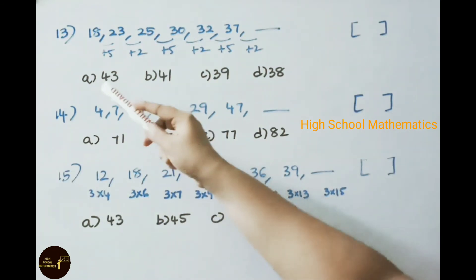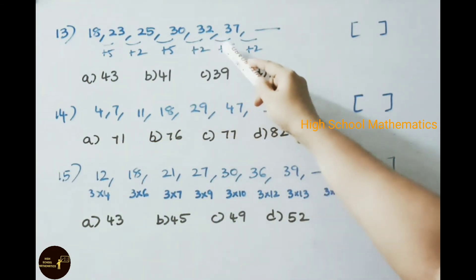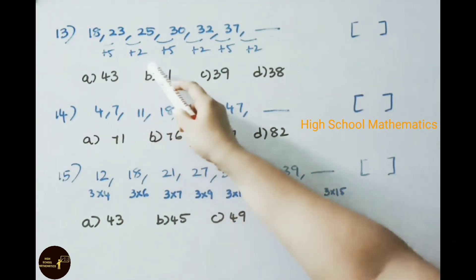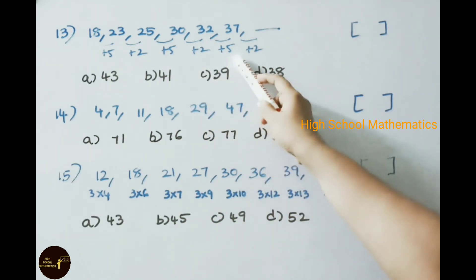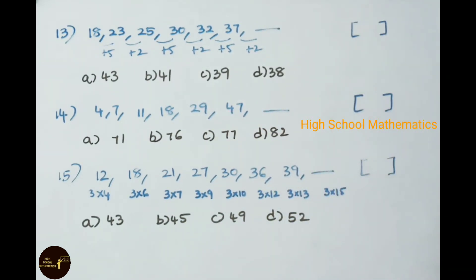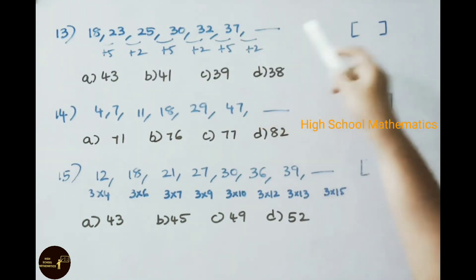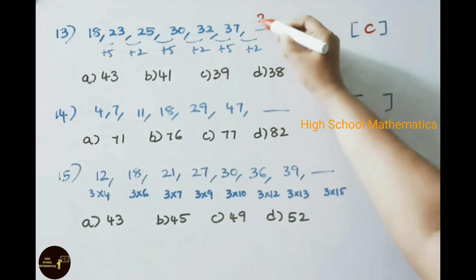Thirteenth practice problem: 18, 23, 25, 30, 32, 37 — find the next term. The pattern alternates plus 5 and plus 2: 18 plus 5 is 23, 23 plus 2 is 25, 25 plus 5 is 30, 30 plus 2 is 32, 32 plus 5 is 37. The next step is plus 2, so 37 plus 2 is 39. The answer is option C, 39.